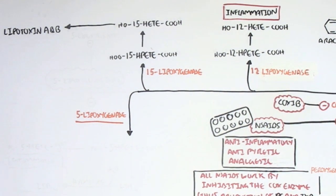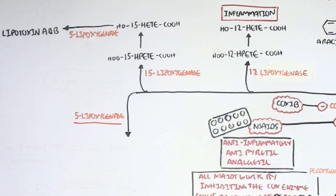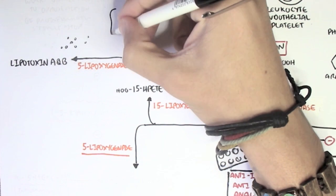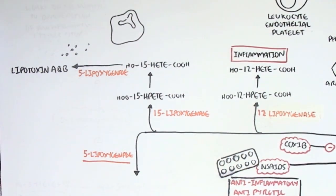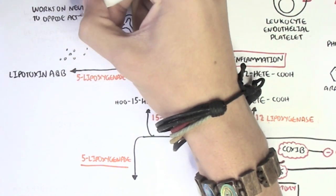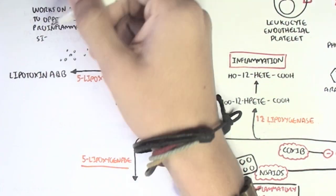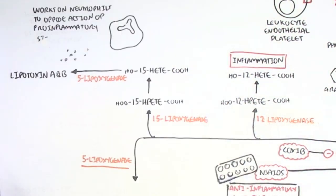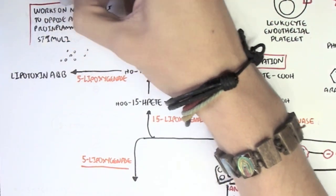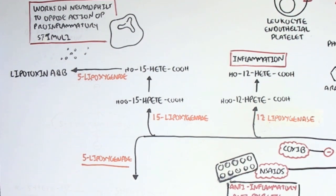Now 15-HETE can convert to lipotoxin A and B by the enzyme 5-lipoxygenase. Now lipotoxin A and B are interesting because they have sort of an anti-inflammatory effect. They act on polymorphic nuclear leukocytes, neutrophils, to pause the action of pro-inflammatory stimuli. Thus it acts like a stop signal to inhibit inflammation. So it's a bit strange because all the other molecules promote inflammation but this sort of suppresses inflammation.